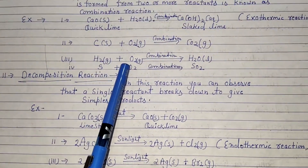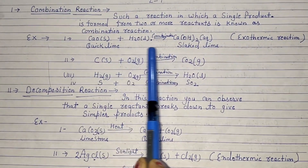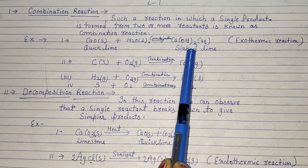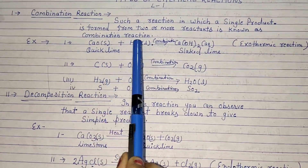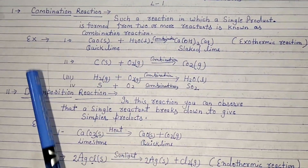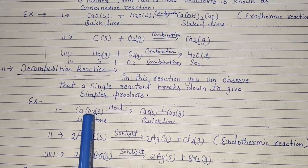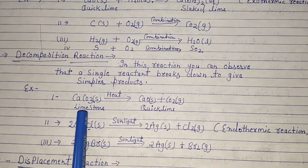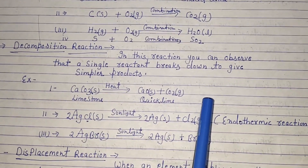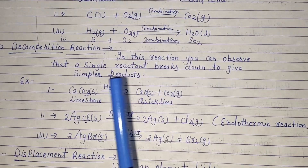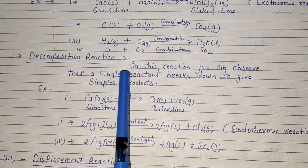So students, in a combination reaction, two reactants combine to form a single product — that is called a combination reaction. In a decomposition reaction, a single reactant breaks down into different parts — that is called a decomposition reaction.